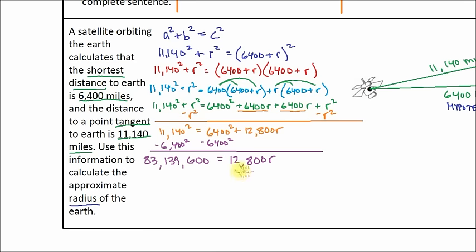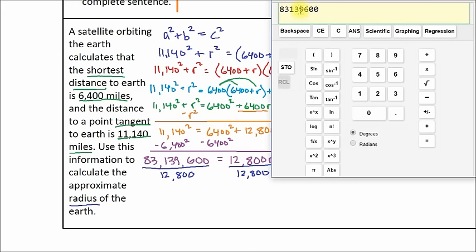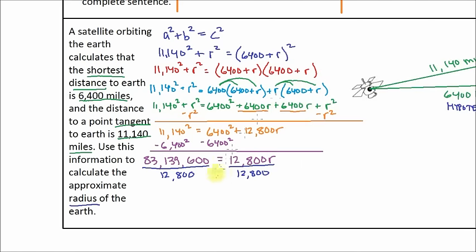And that's going to be equal to, well, 6,400 squared minus 6,400 squared, those cancel and all I'm left with is 12,800R. And now I'm going to go ahead and divide both sides by 12,800. That's going to get R by itself. We're almost done. Divide this side by 12,800. And let's go ahead and put that in our calculator. Again, remember the 12,800 cancels and we end up with 83,139,600 divided by 12,800. And that's equal to 6,495.3. We've got 6,495.3 is equal to R. And there is our radius.